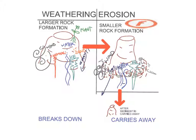Changes to the Earth's surface can happen because of weathering, erosion, and deposition. In this video guide, we'll take a look at the differences between those three.